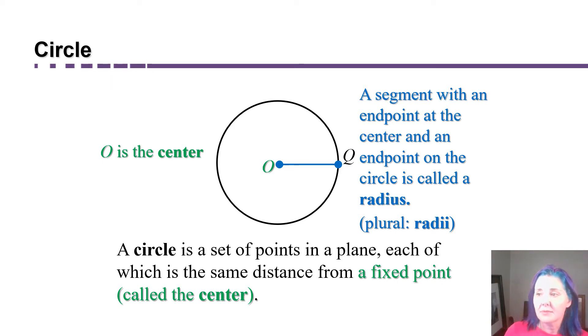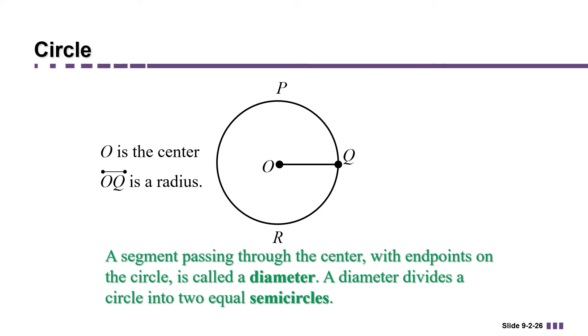A radius is any segment with its endpoints at the center and the outside of the circle. A segment that passes through the center with endpoints on the circle is called a diameter. A diameter is twice as big as a radius, and it divides a circle into two equal semicircles.